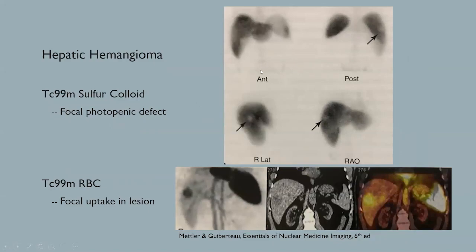In this example, sulfacolloid imaging shows a focal photopenic defect in the right hepatic lobe. An additional study with labeled technetium-99m red blood cells shows focal uptake of labeled red blood cells in that lesion. SPECT-CT imaging shows a hypodense lesion in the right hepatic lobe taking up labeled red blood cells, compatible with a hepatic hemangioma.